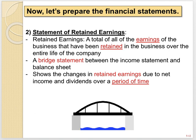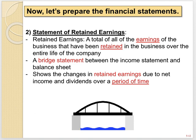When we talk about the statement of retained earnings, the first thing you need to understand is what retained earnings is. We have not talked about that in this class yet — it was mentioned in chapter one, but I have chosen to present the information in a different order than the textbook. Retained earnings is a total of all of the earnings of the business that have been retained in the business over the entire life of the business.